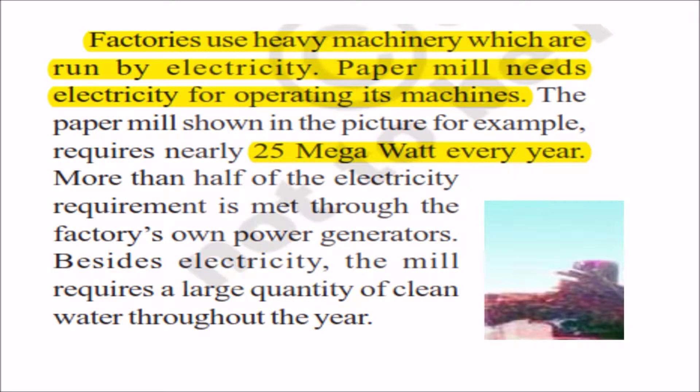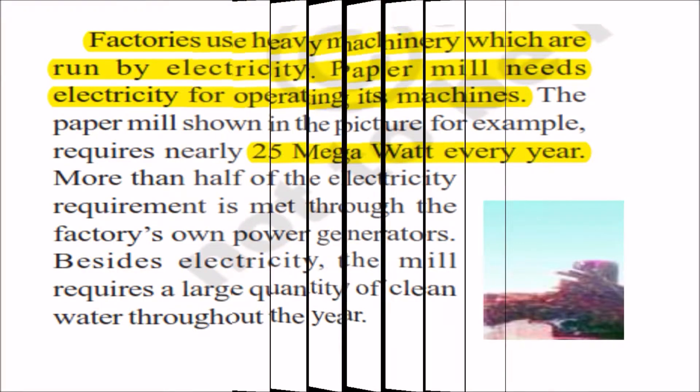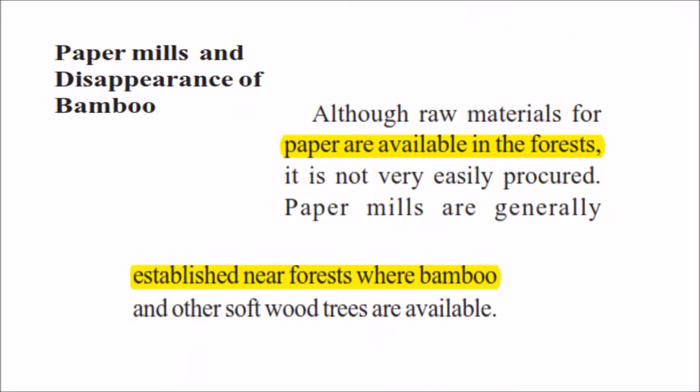Paper mills and the disappearance of bamboos. Forests are disappearing today — we call this deforestation. Due to population growth, we need to construct more houses and need more land, so forests are being cleared for various other purposes. This is one of the reasons why deforestation is happening.